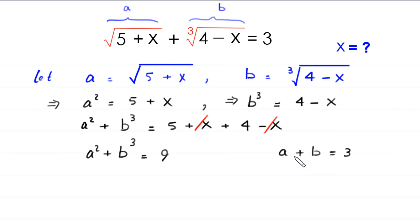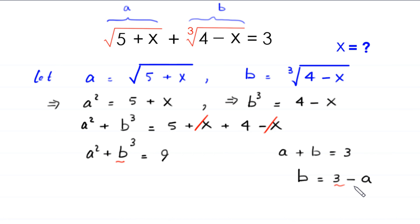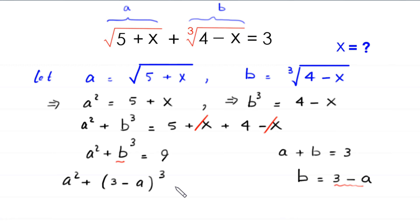If we make b the subject of this equation, this implies that b is equal to 3 minus a. Now in the equation a squared plus b cubed equals 9, we replace b with the value 3 minus a. This will become a squared plus 3 minus a, whole cubed, is equal to 9.